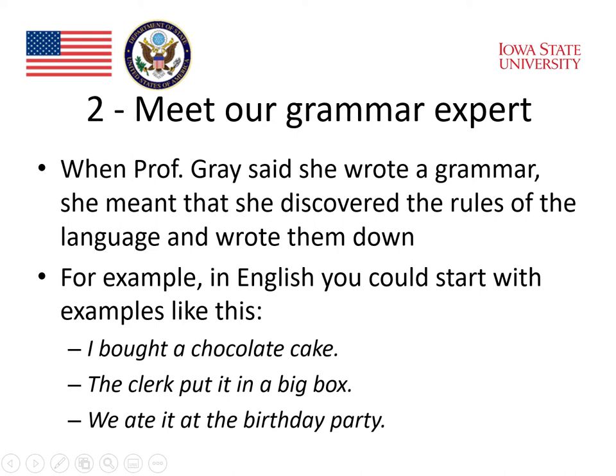When Professor Gray said she wrote a grammar, she meant that she discovered the rules of the language and wrote them down. For example, in English, you could start with examples like this: 'I bought a chocolate cake.' 'The clerk put it in a big box.' 'We ate it at the birthday party.' These are examples of sentences in English, and so how can we write a grammar that describes those sentences?